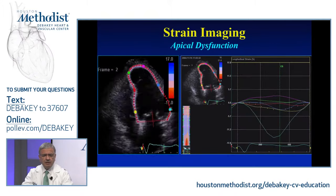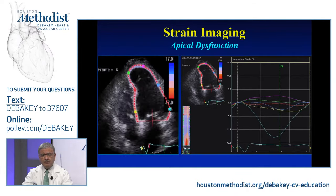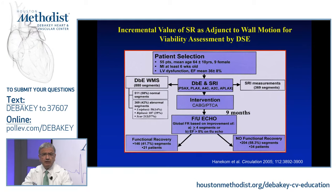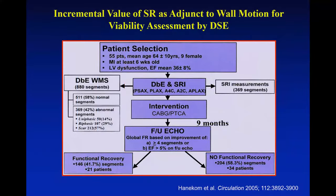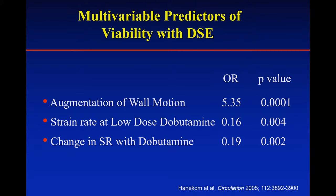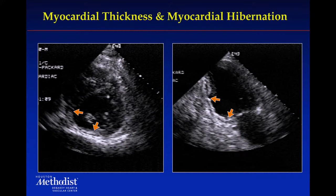Viability can be assessed qualitatively and also quantitatively with strain and strain rate imaging. Data from Dr. Tom Marwick and others show that augmentation of wall motion qualitatively predicts viability, as does strain rate quantitated at low-dose dobutamine. Using stress strain rate, you could add quantitative prediction to qualitative assessment — a biphasic response conveys highest specificity while any improvement response provides higher sensitivity but lower specificity.